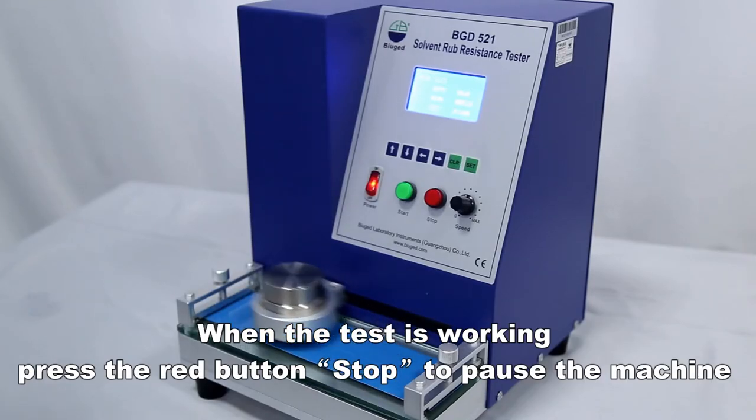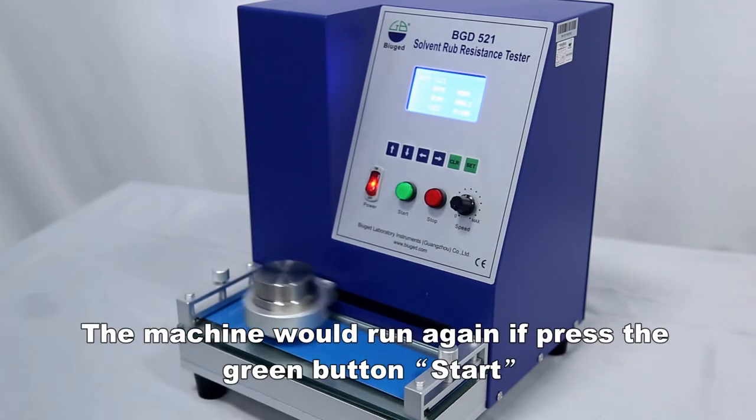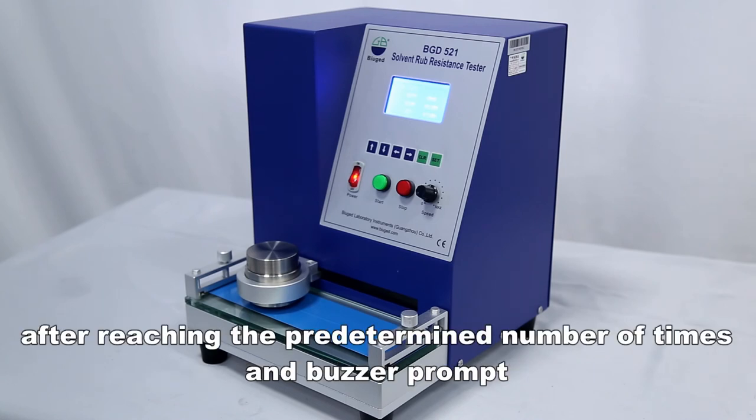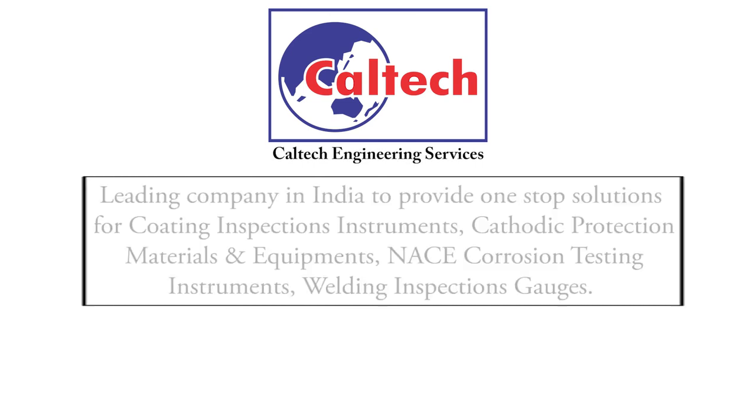When the test is working, press the red button stop to pause the machine. The machine would run again if you press the green button start. The machine will stop automatically after reaching the predetermined number of times with a buzzer prompt.